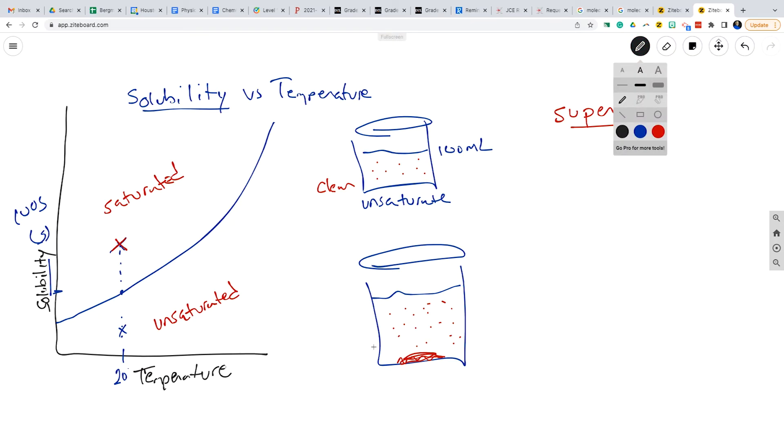So what you do is you have this beaker right here, and then you put it on a hot plate. And what happens is it heats up. And when it heats up, so now we go to a higher, higher temperature, of course, it becomes unsaturated.